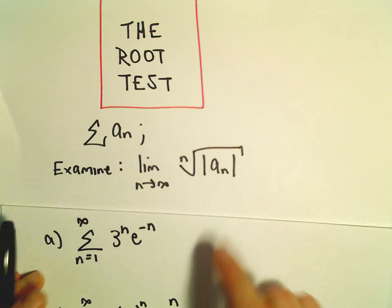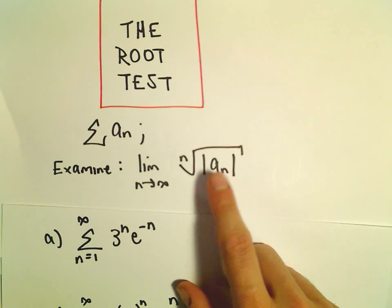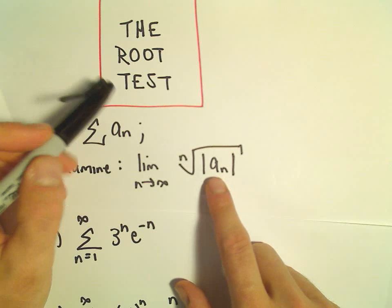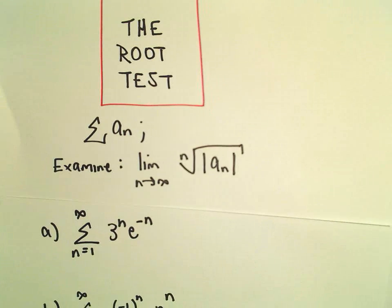Just like the ratio test, the root test has similar results. If the limit's less than 1, the root test says the series converges. If it's greater than 1, it diverges. If it equals 1, it's inconclusive.